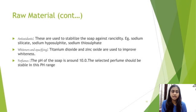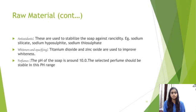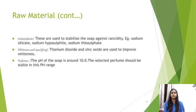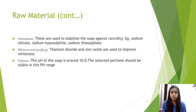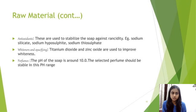Raw materials — antioxidants, whiteners, opacifying agents, and perfumes: antioxidants are used to stabilize the soaps against rancidity. Examples include sodium silicate, sodium hyposulfite, and sodium thiosulfate. Titanium dioxide and zinc oxide are used to improve whiteness. The pH of soap is around 10, so the selected perfume should be stable at this pH.